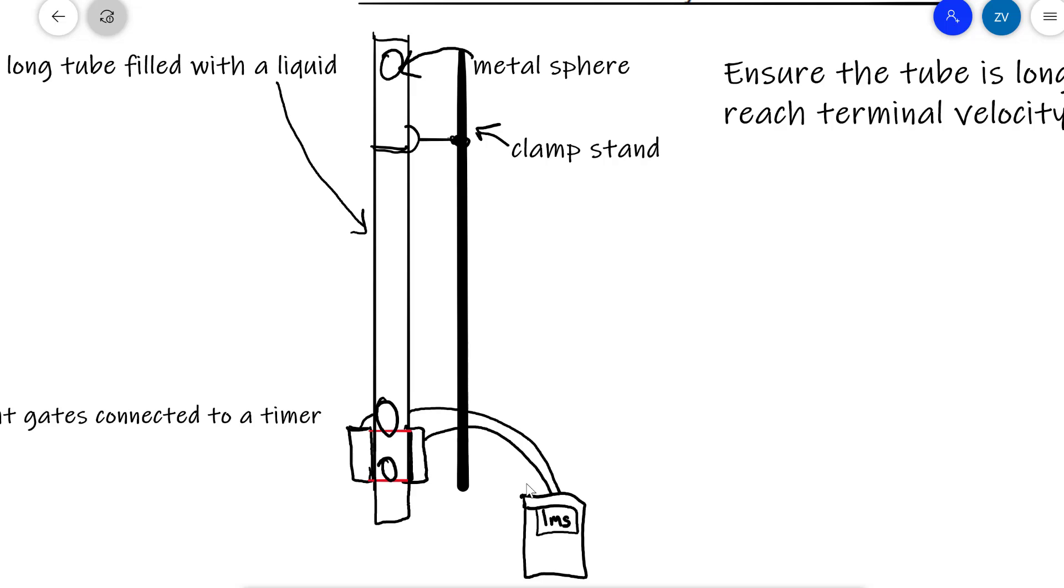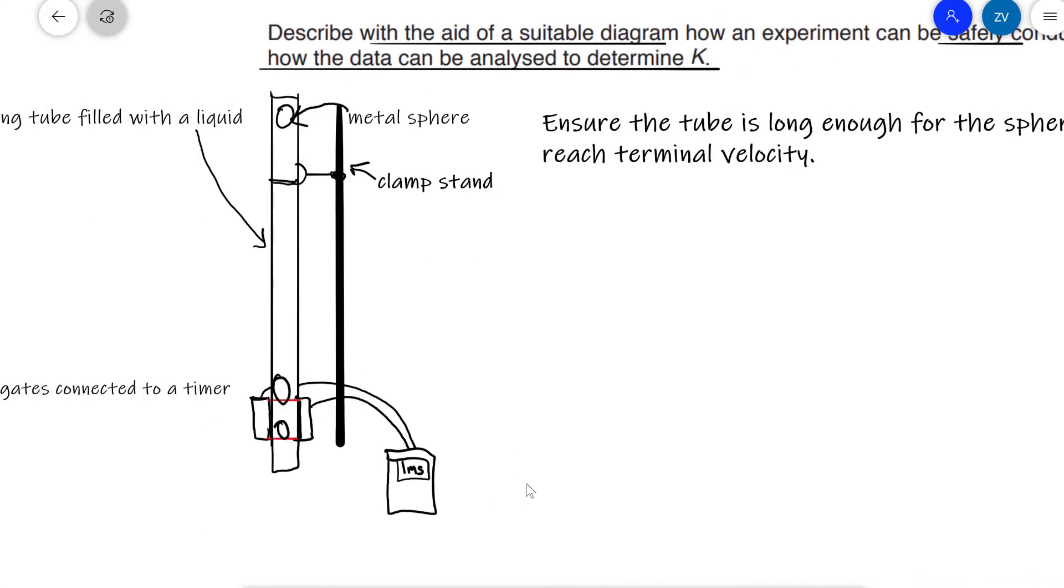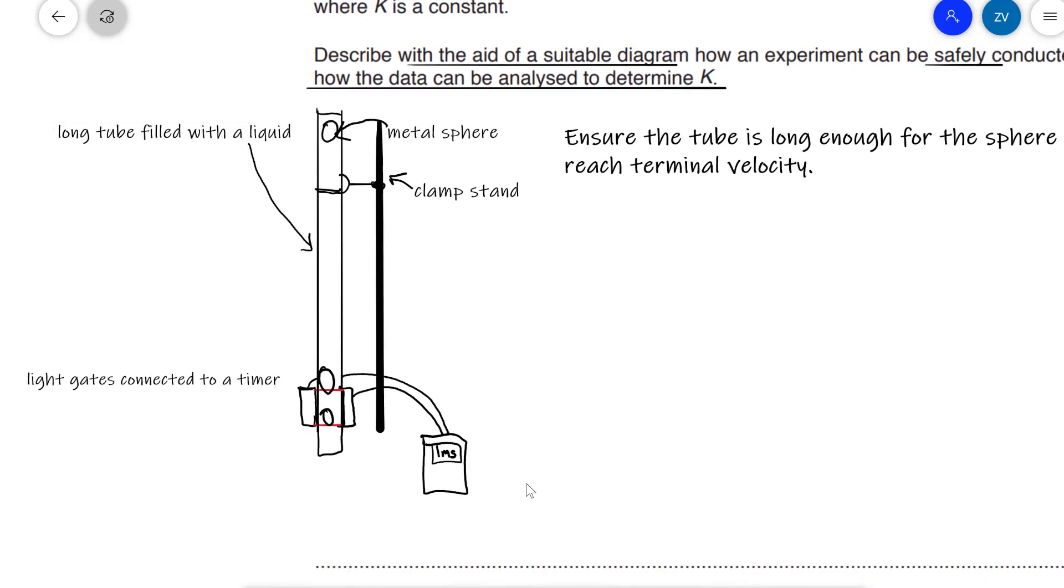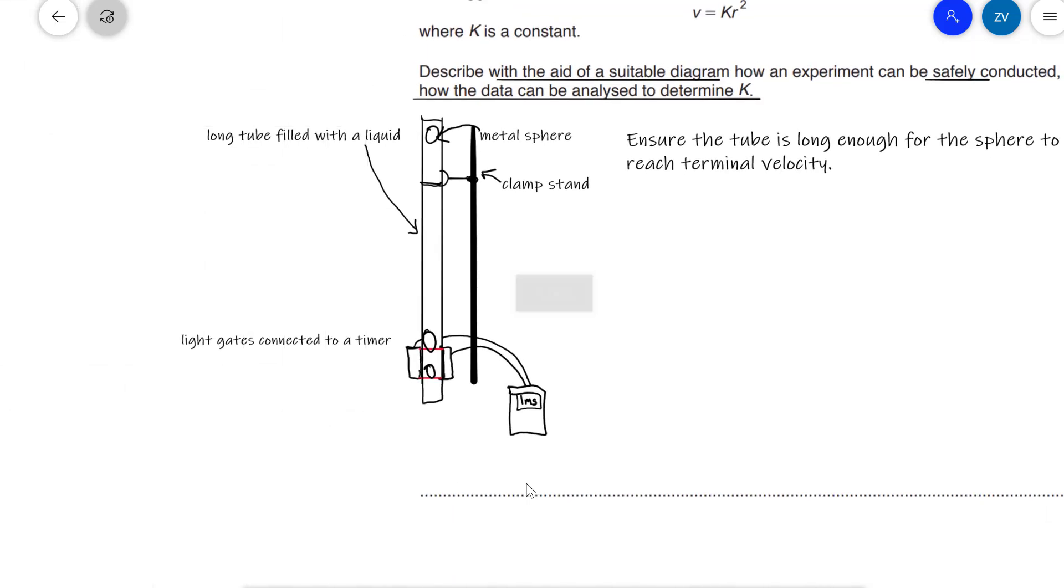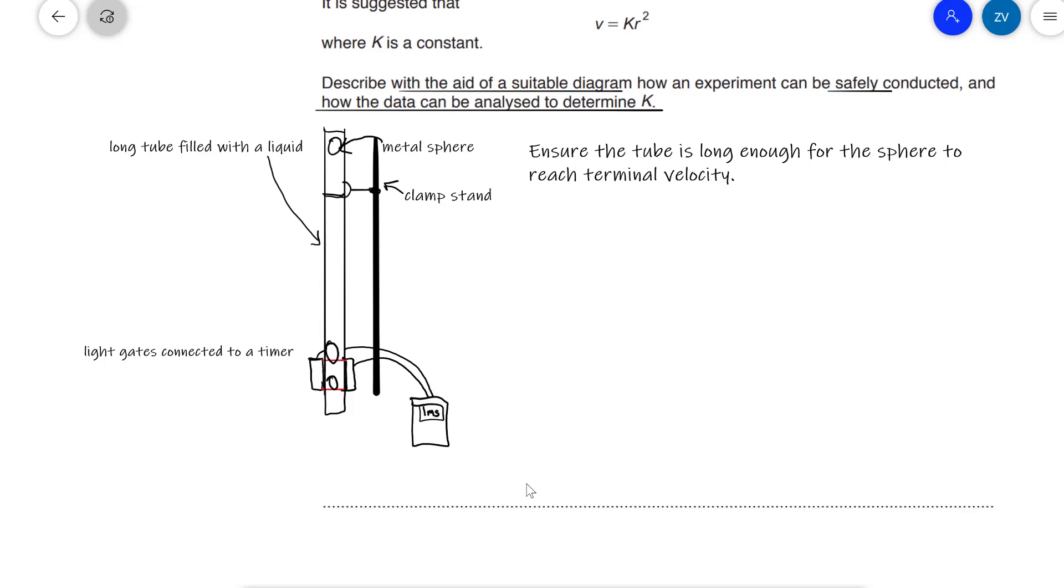Okay guys, so far we have a labeled diagram. And additionally, that also has a safety component because we've connected the entire apparatus onto a clamp stand. We've ensured the tube is long enough for the sphere to reach terminal velocity. Now it is time to have a look at describing how this experiment can actually be conducted. The first part of any description of an experiment will be a list of measurements and what instrument will use to make those measurements.